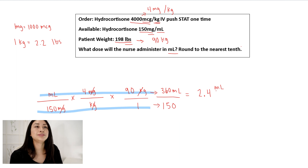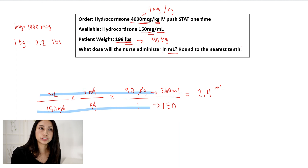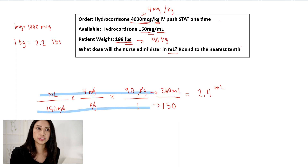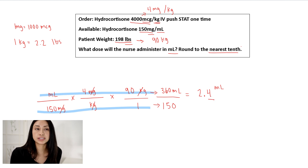But every time you finish solving your equation and get your answer, you want to figure out if that's it or if there's more to the question. Let's go back to the question — what dose will the nurse administer in milliliters? The dose is a one-time STAT dose, so no need to divide it further. I also see it says round to the nearest tenth. So I need to round. Looking at 2.4 — the four is in my tenths place and the two is in my ones place. I already have my answer: 2.4.